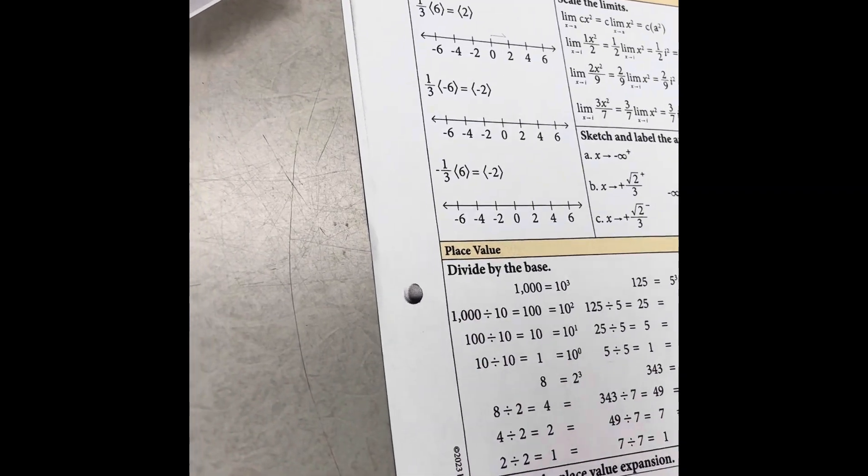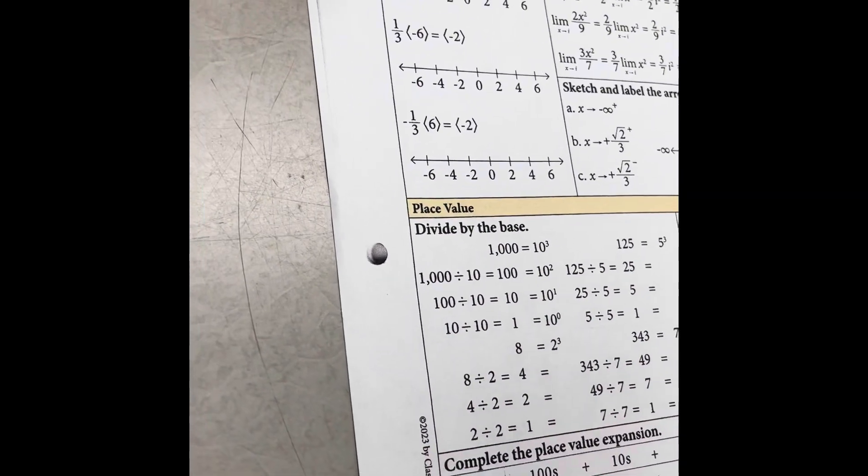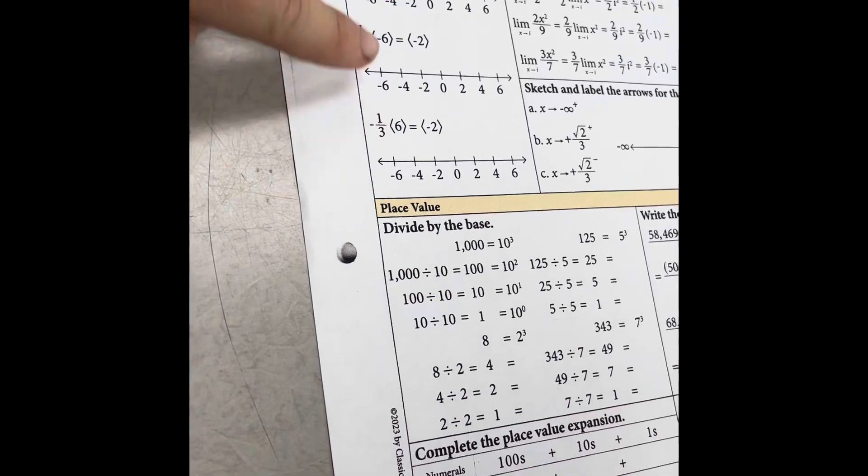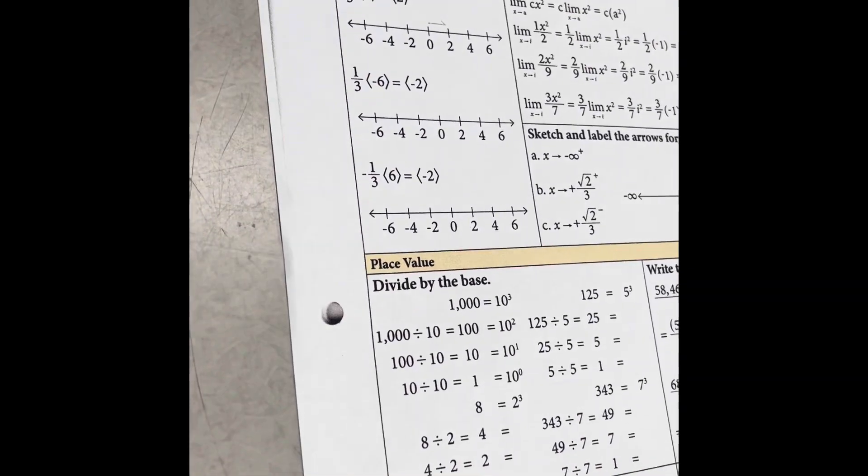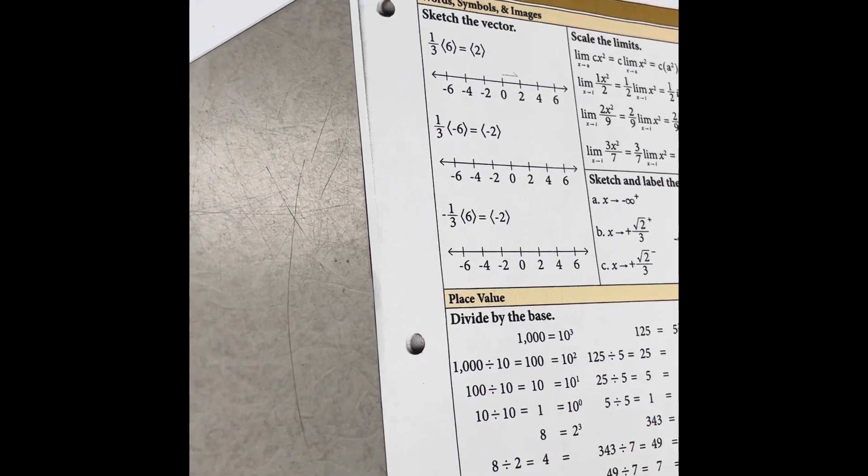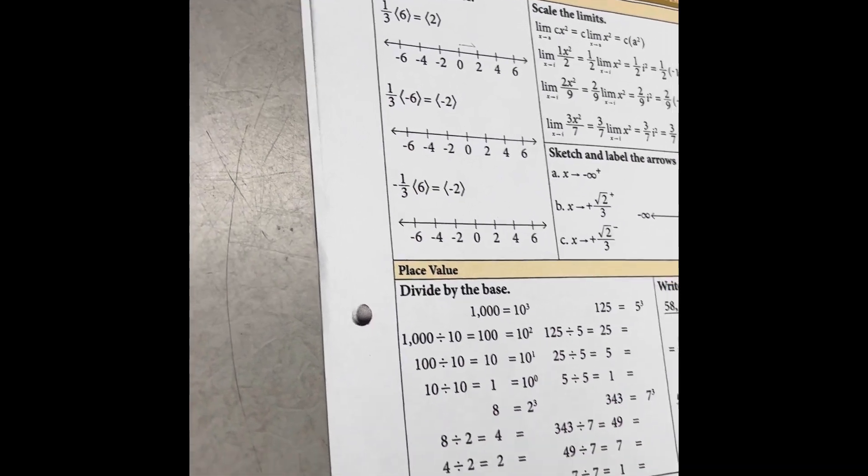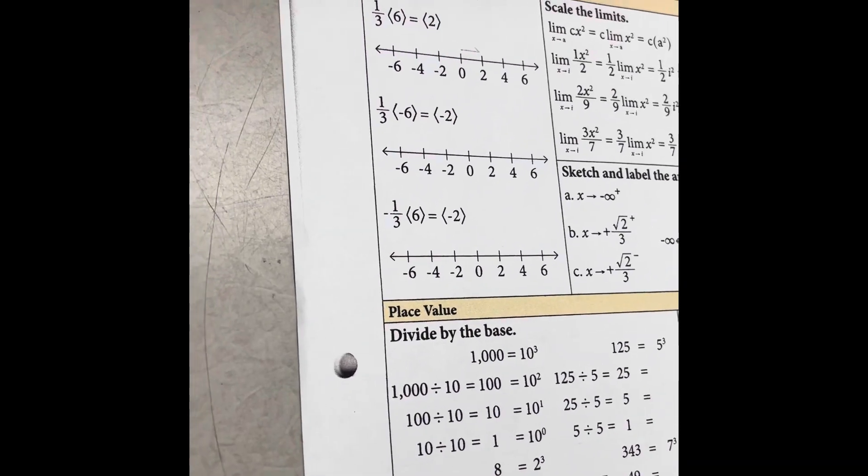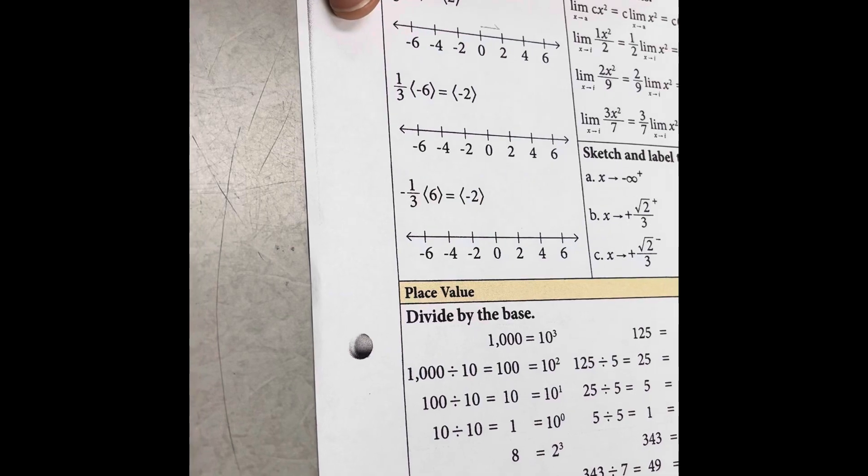Sketch the vector. Good. Sketch the vector. So do you recognize anything right here? What looks familiar to you? The one third times six. Okay. What is one third times six? Two. Two. Very good. All right. Sketch the vector. So let's look at the number line here. What does it look like is on the number line?